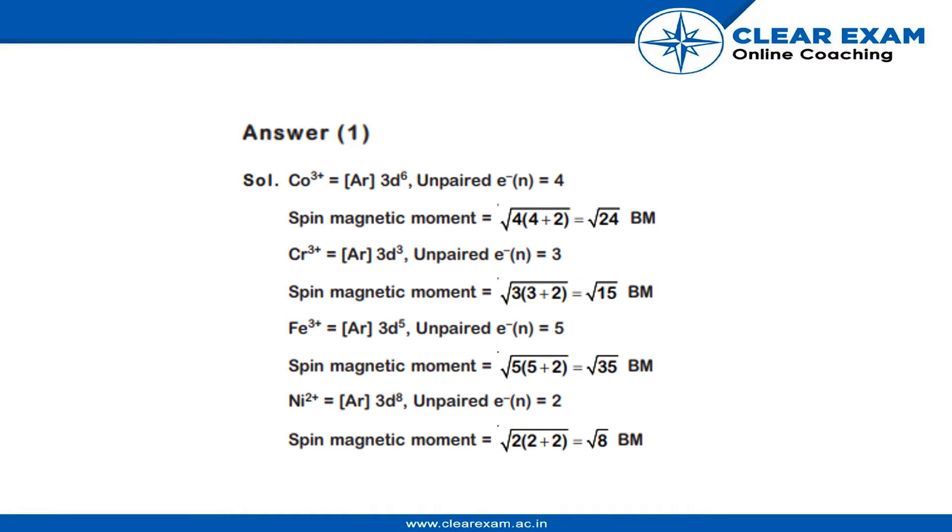In case of Co3+, it has configuration of 3d6, so unpaired electrons would be 4. N becomes 4. The spin magnetic moment is √(4×6) = √24 BM. So Co3+ corresponds to √24 BM.